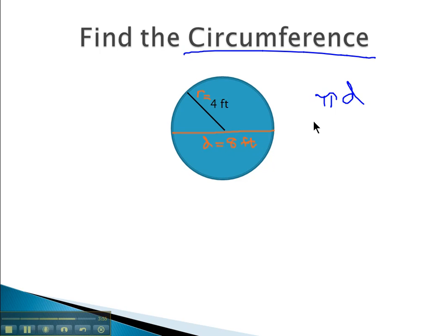Plugging this information to our formula, pi is 3.14 times the diameter, which is 8 feet. All that's left is to multiply 8 times the 3.14 to give us 25.12 feet for our circumference, or distance around the outside of the circle.